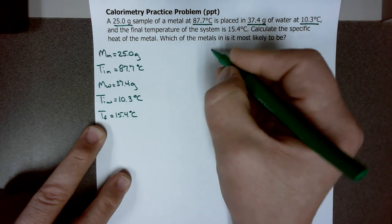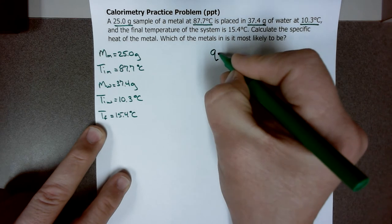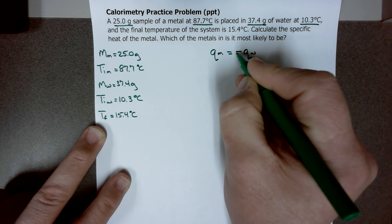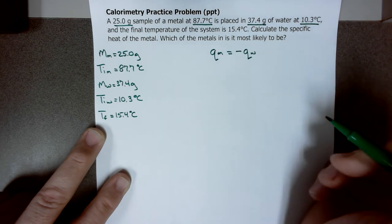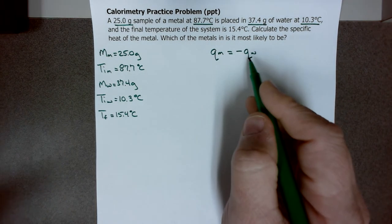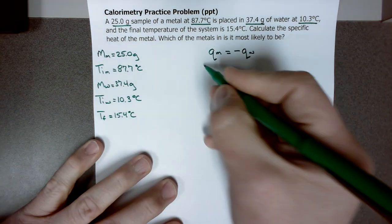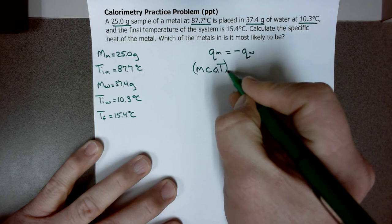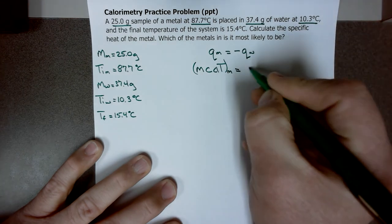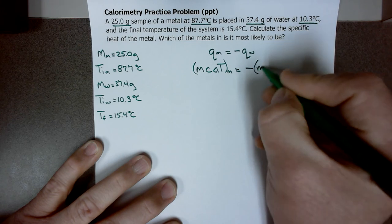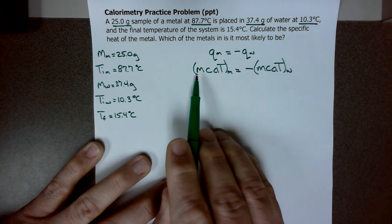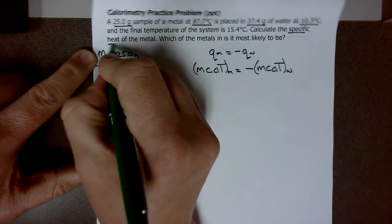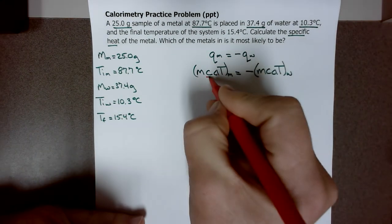The equation is that the heat of the metal — because that's the higher temperature one — is going to equal the heat of the water but with an opposite, negative value. Whatever is lost by the metal is gained by the water. So the equation is MC∆T for the metal equals the negative MC∆T of the water. I have the mass of the metal, but I don't have the specific heat of the metal — that's what we're looking for, so I'll need to isolate for C.